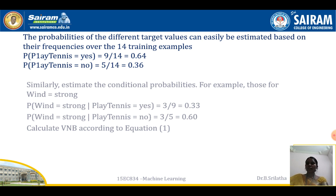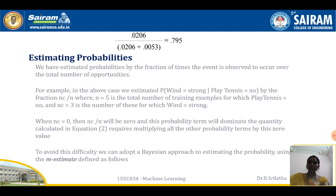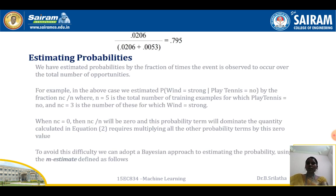Using these values, we calculate v_NB. For PlayTennis=Yes: P(Yes) times P(Sunny|Yes) times P(Cool|Yes) times P(High|Yes) times P(Strong|Yes) equals 0.0053. For PlayTennis=No: the same calculation gives 0.0206. Normalizing so they sum to 1, the conditional probability of PlayTennis=No is 0.0206 divided by (0.0206 + 0.0053), which equals 0.795. So the Naive Bayes classifier assigns the target value PlayTennis=No to this instance.